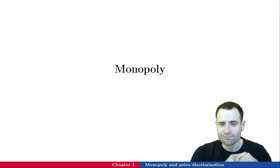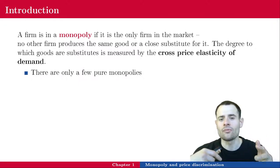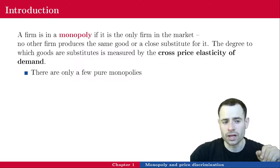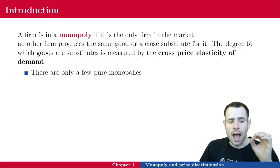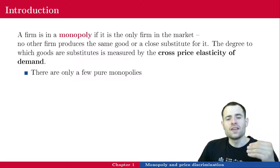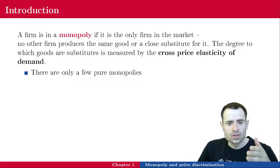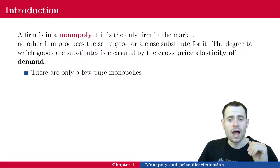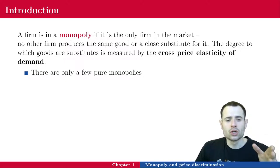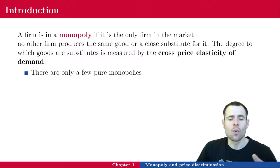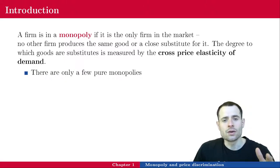A firm is in a monopoly if it is the only firm in the market — no other firm produces the same good or a close substitute for it. The absence of a close substitute matters because facing a firm with a close substitute means facing competition. Coca-Cola, for instance, is the only one to produce their Coca-Cola bottles, but Pepsi-Cola has a pretty close substitute, so Coca-Cola is not a full monopolist. The degree to which goods are substitutes is measured by the cross-price elasticity of demand — the percentage change in demand for one good if the price of another increases by 1%.